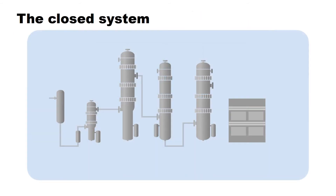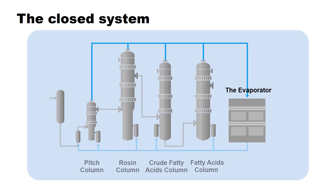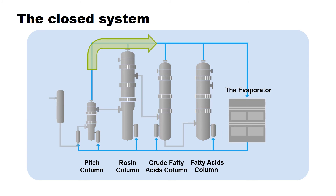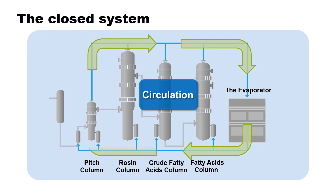Harima M.I.D. Incorporated operates the distillation plant as a closed system. Steam used in the distillation column is condensed and then has its oil content removed before being mixed with fresh water, evaporated and sent back to the distillation column to be recirculated. Odorous substances are burnt out by the biomass boiler as part of thorough-going environmental measures.